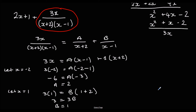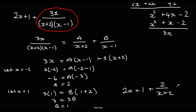So let's rewrite this: we've got 2x plus 1 plus A — which is 2 — over (x + 2), plus B — which is 1 — over (x − 1). And there's our answer.